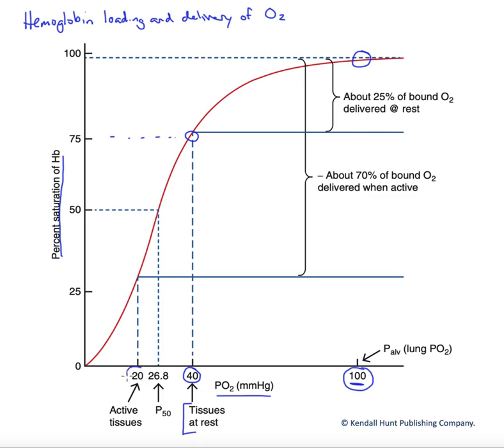And so here we have our active tissues, on average, maybe dropping down to about 20 millimeters of mercury PO2. And again, on average here, we're close to 25% saturated, a little bit above. But we can round off for the moment.